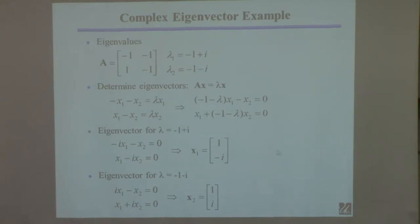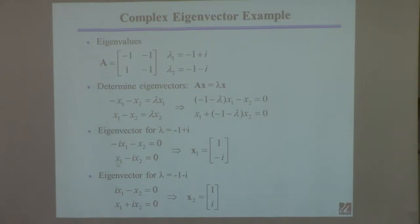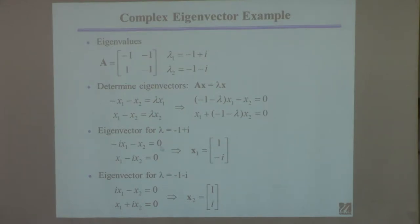You get two equations. I promised they'd be linearly dependent. If I multiply across this equation by i, I'll get the other equation — because you'll get i and minus i squared here, and i squared is minus one, so minus i squared is plus one. So these are the same equation; they're linearly dependent by i.